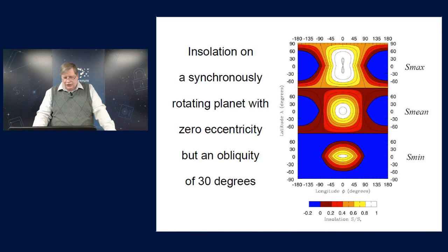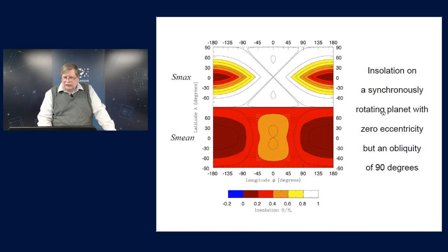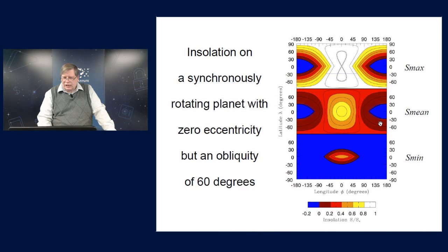The same applies if we change the obliquity, if we go to 60 degrees, that region of permanent daylight shrinks, and likewise, the regions of permanent nighttime shrink as this figure eight track of the sub-solar point broadens in latitude and longitude too.